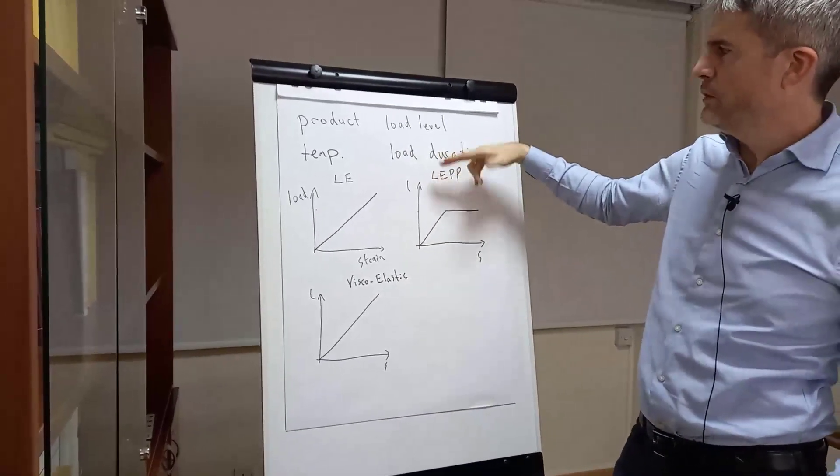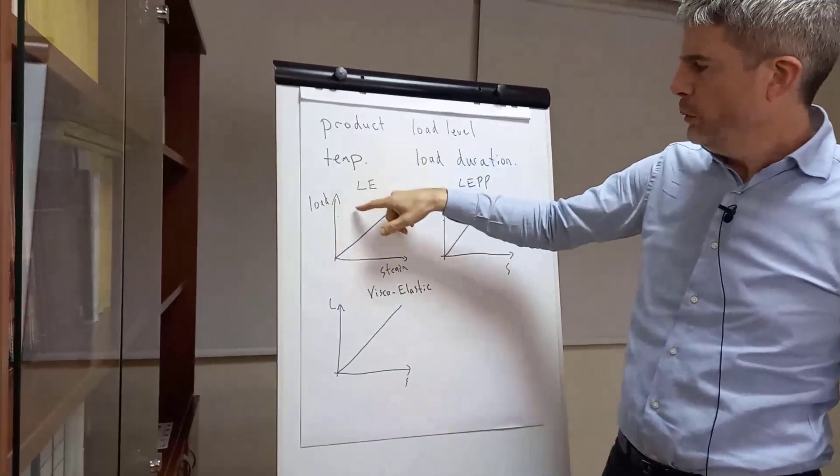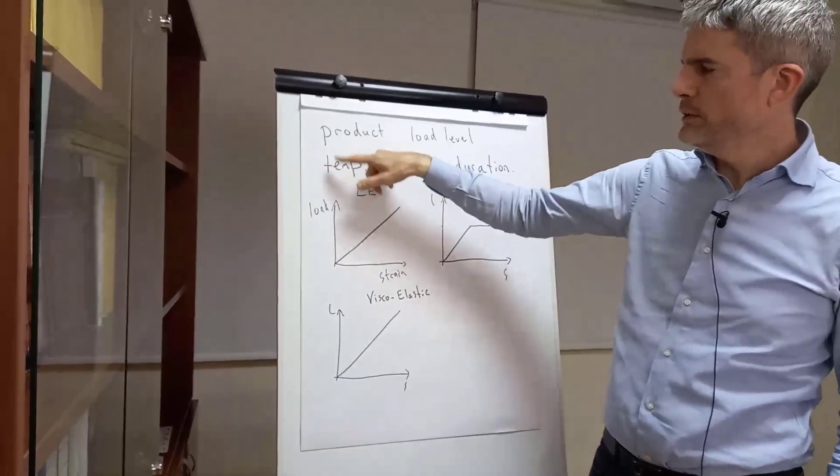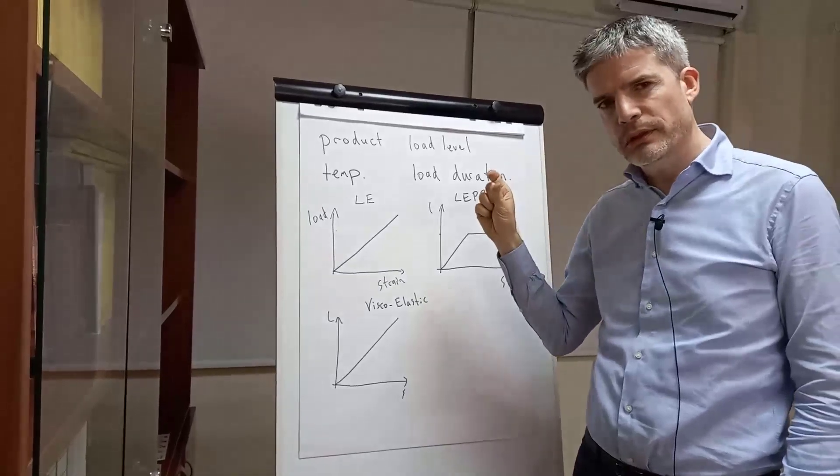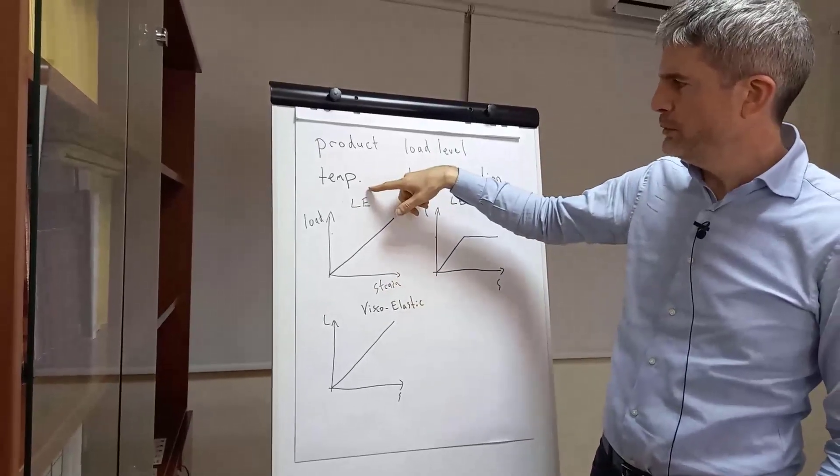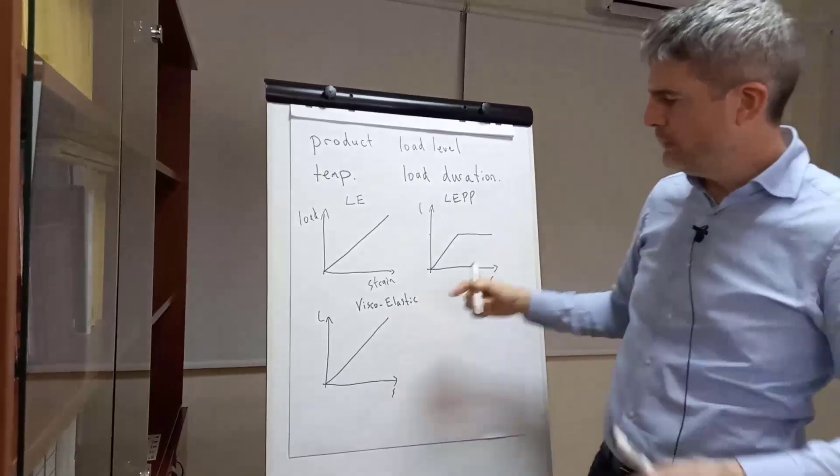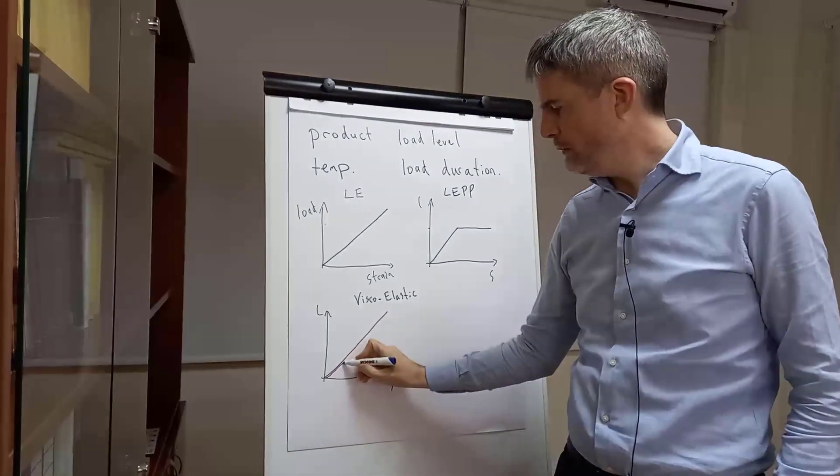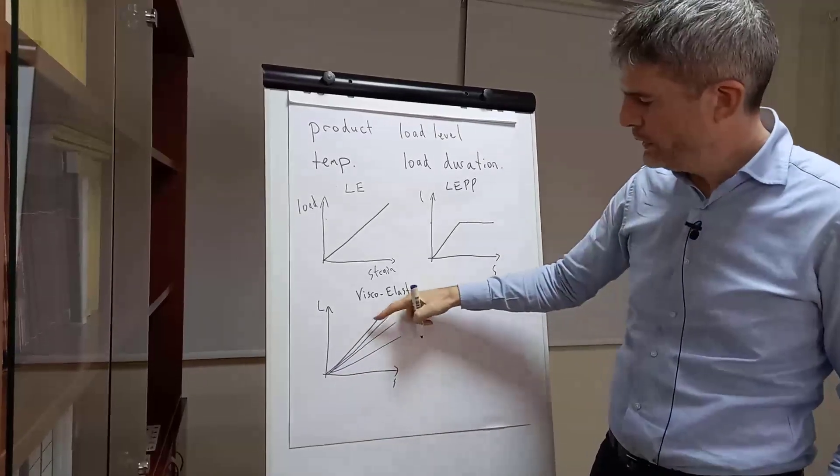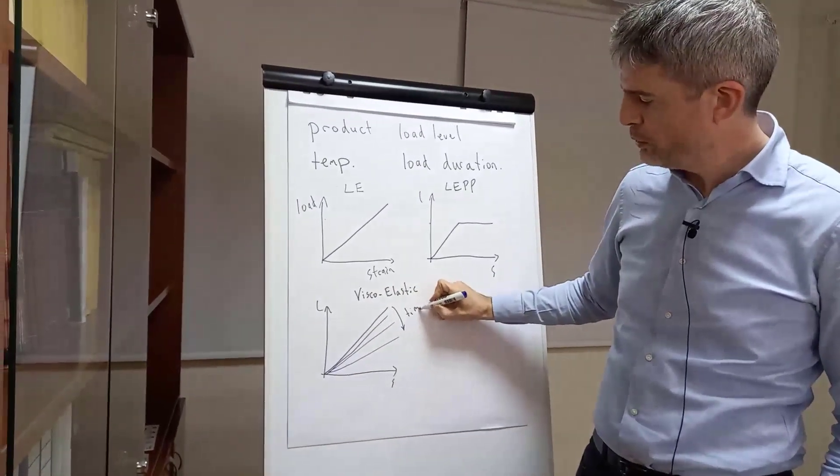It does not take into account changes in the load because it's one EA value. With all of these, there isn't a commonly used method that takes into account changes in temperature, so you assume that you've got one temperature during the life of the structure, one design temperature. So all of these are appropriate for the temperature, and they're all appropriate for the product. With visco-elastic it will change with time, so as time goes by, the EA value will slowly reduce, so we'll get a lower EA value. I've exaggerated the change there - it's not that big, but that's what happens as time progresses.